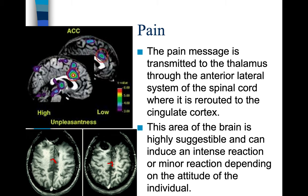The pain message is transmitted to the thalamus through the anterolateral system of the spinal cord, where it is rerouted to the cingulate cortex. This area of the brain is highly suggestible and can induce an intense reaction or a minor reaction depending on the attitude of the individual.